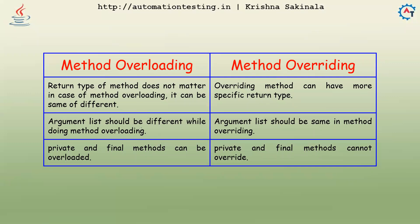The argument list should be different when doing method overloading, but the argument list should be the same when doing method overriding. The reason is it should be a replica of your parent class — the child class should have the same method signature, but the logic inside the method should be different.